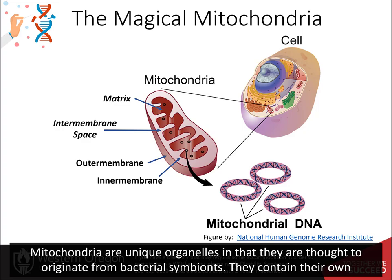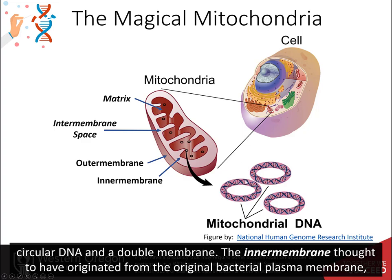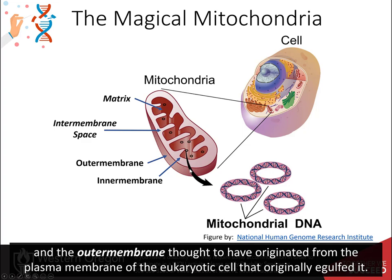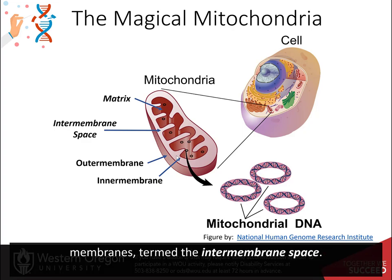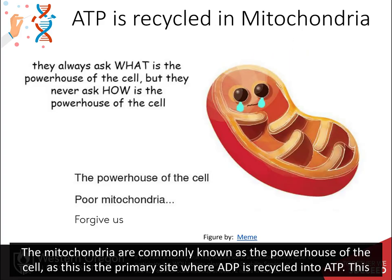Mitochondria are unique organelles thought to originate from bacterial symbionts. They contain their own circular DNA and have a double membrane — the inner membrane, thought to have originated from the original bacterial plasma membrane, and the outer membrane, thought to have originated from the plasma membrane of the eukaryotic cell that originally engulfed it. This creates two spaces: the most internal space called the matrix, and the intermembrane space between the two membranes. Mitochondria are commonly known as the powerhouse of the cell, as this is the primary site where ADP is recycled into ATP.